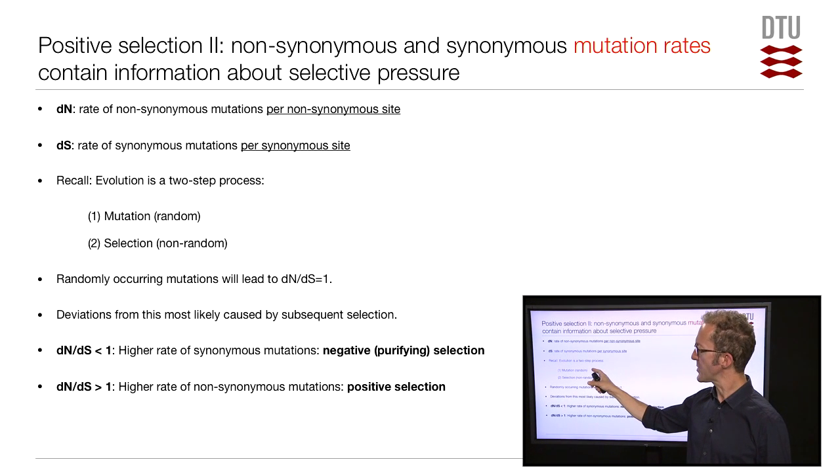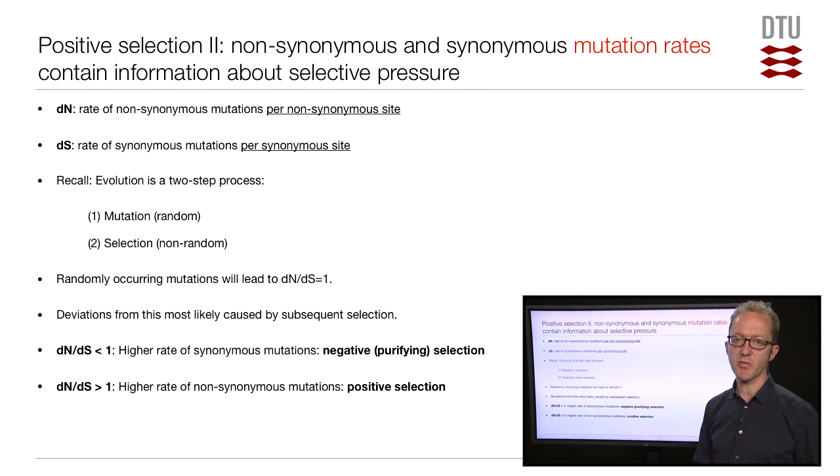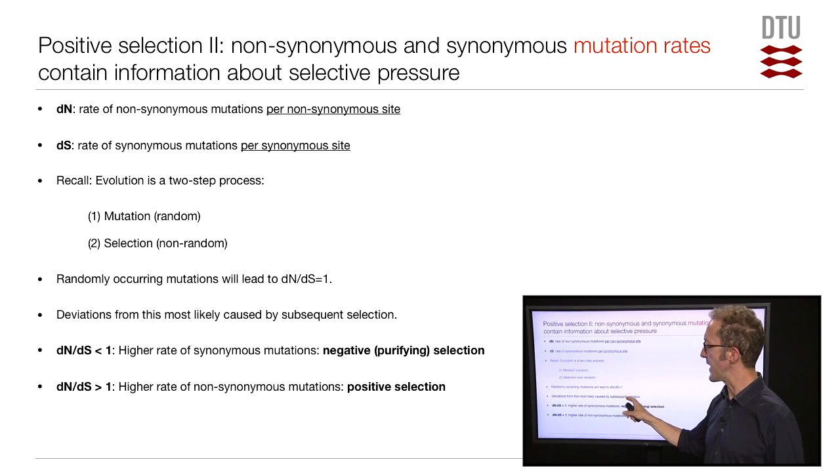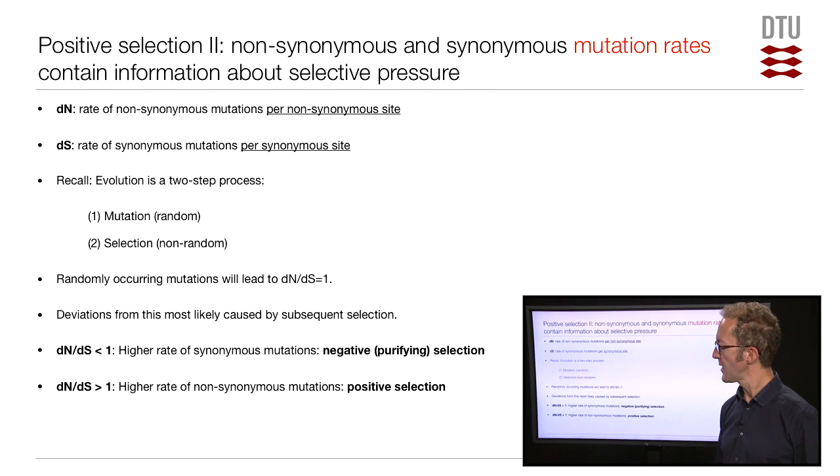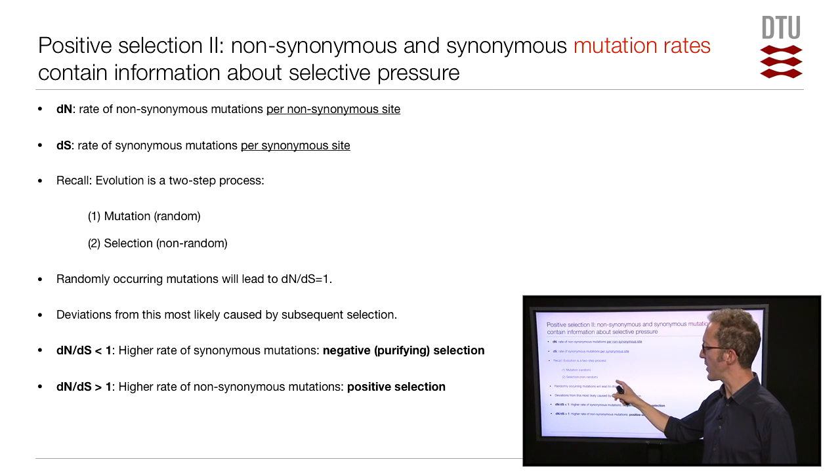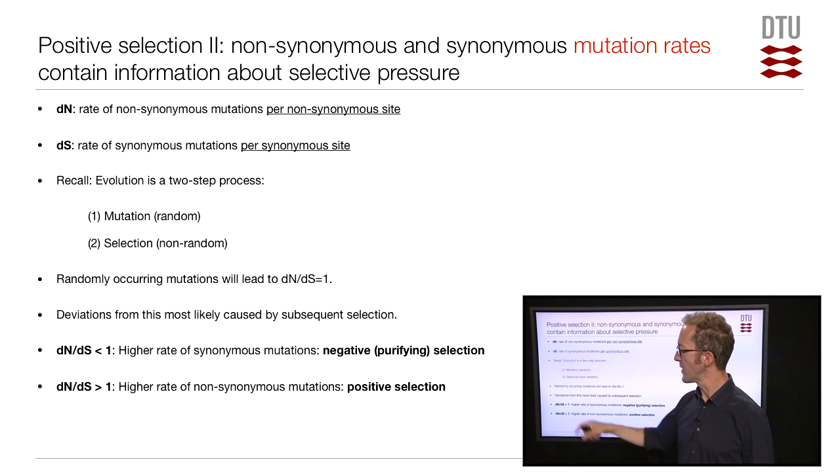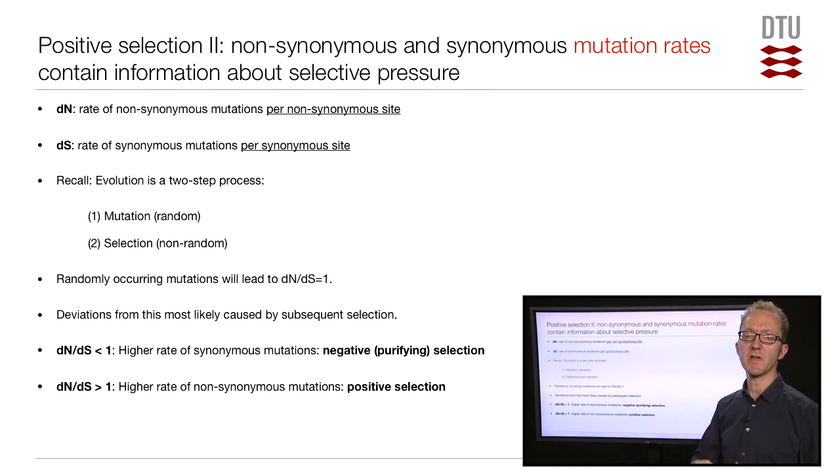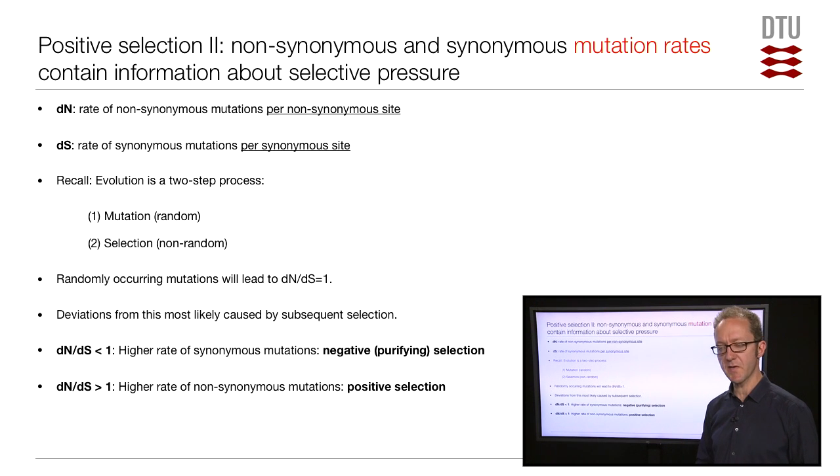So randomly changing DNA, by definition, will lead to a DN-DS ratio of 1. Deviations from a DN-DS ratio of 1 must therefore be caused by selection. And this is how we can use modeling to find selection. If we come up with a substitution model which has as one of its parameters the DN-DS ratio, we then fit a model to the data, estimate the DN-DS ratio, and find that the value is significantly different from 1, then that is in itself evidence that we have selection going on. That's how we will do it in the exercise.